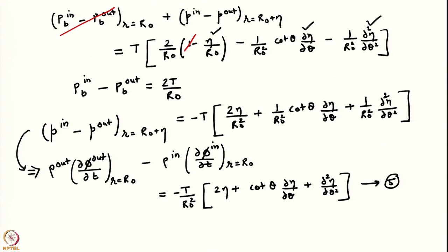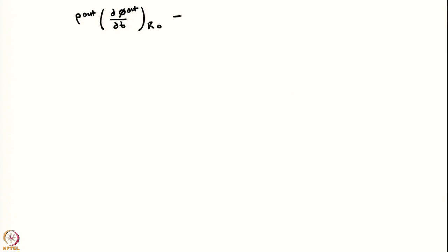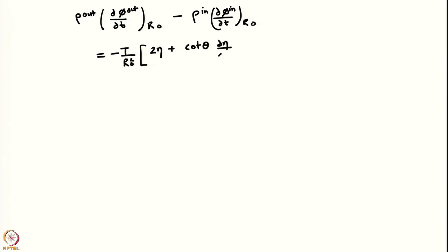Let us write the pressure boundary condition once again. So: rho_out (d phi_out/dt) at R_0 minus rho_in (d phi_in/dt) at R_0 minus (2/R_0^2)[2 eta + cot(theta) d(eta)/d(theta)] + (1/R_0^2) d^2(eta)/d(theta)^2 = 0. Recall that eta = E times P_L (writing a dot to indicate the cos theta argument to save space).